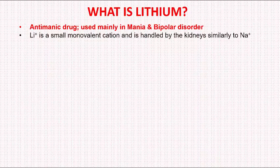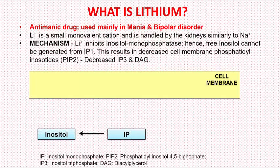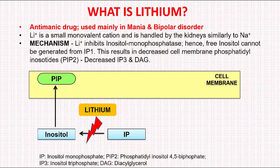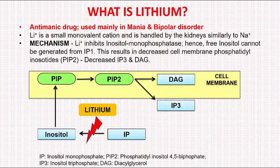Lithium is a small monovalent cation and is handled by the kidneys in the same way as sodium. How does it act? Lithium mainly inhibits the breakdown of inositol monophosphate to inositol. This results in a decrease in free inositol and subsequently a decrease of PIP2. PIP2 is a precursor of second messengers IP3 and DAG in the cell membrane, and these two second messengers are responsible for various effects.